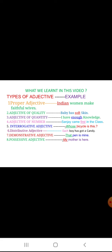Interrogative adjective: whose bicycle is this? — here whose is an interrogative adjective. Distributive adjective: each boy has got a candy — each is a distributive adjective. We use each, every, either, neither, nor. Demonstrative adjective: that pen is mine, this pen is mine, these are mine — demonstrative adjectives point out things. Possessive adjective: my mother is here — my is a possessive adjective answering the question whose. Whose mother? My mother.